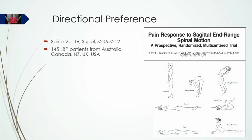In that study, 145 patients from clinics in Australia, Canada, New Zealand, the United Kingdom, and the USA were subjected to the sagittal plane test movements described by McKenzie under strictly controlled conditions. Pain was mapped and intensity measured before and after single end range movements and sets of 10 movements up to a maximum of 40 movements. The order of test movements was randomized.